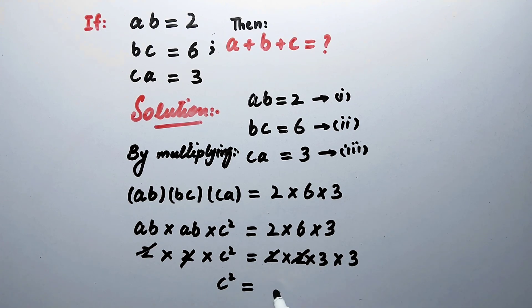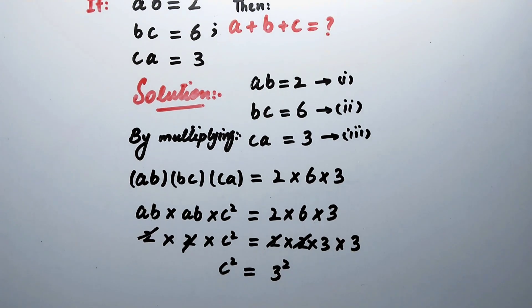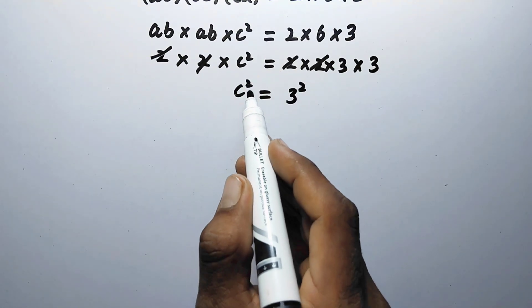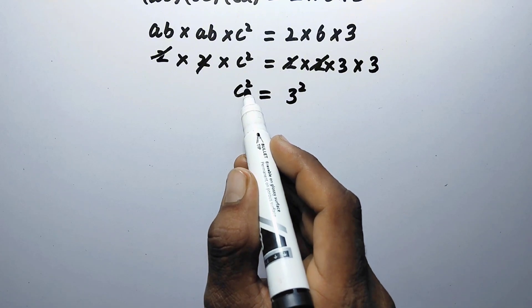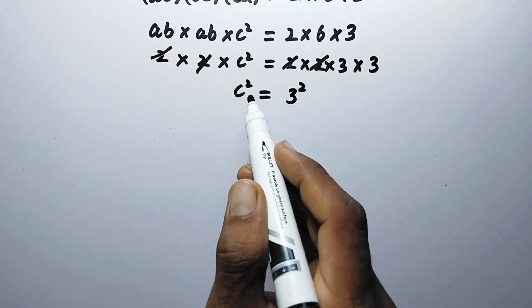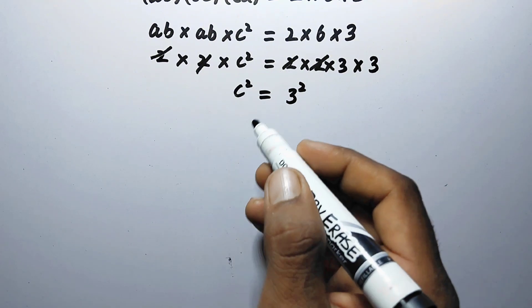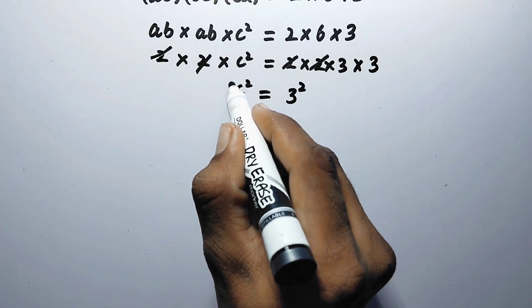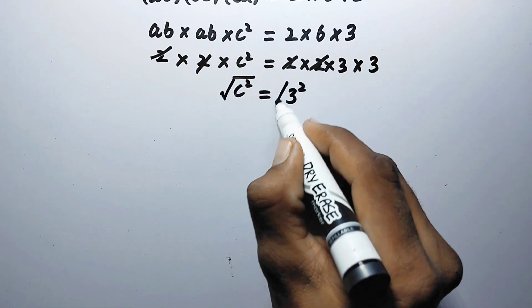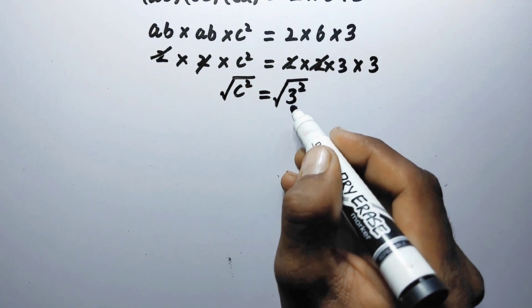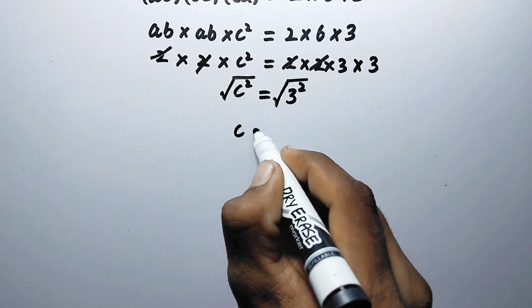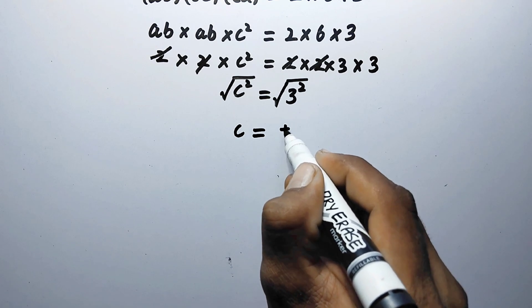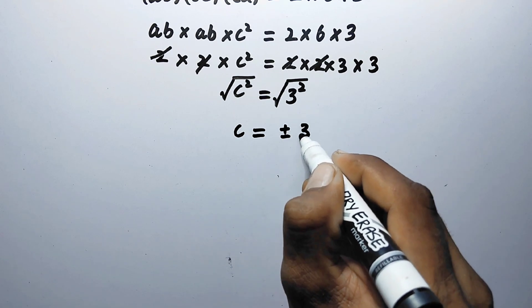The remaining is c squared equal to 3 times 3, which is the same as 3 squared. So now we need to eliminate this square; therefore we will take the square root on both sides, and here we will get c equal to plus or minus 3.